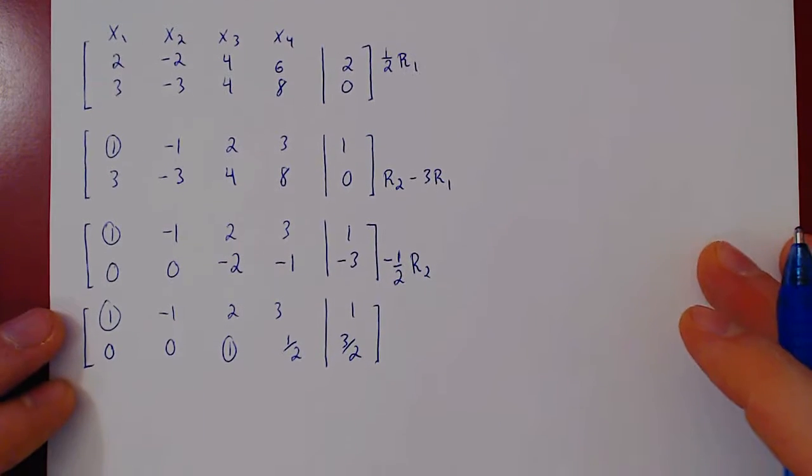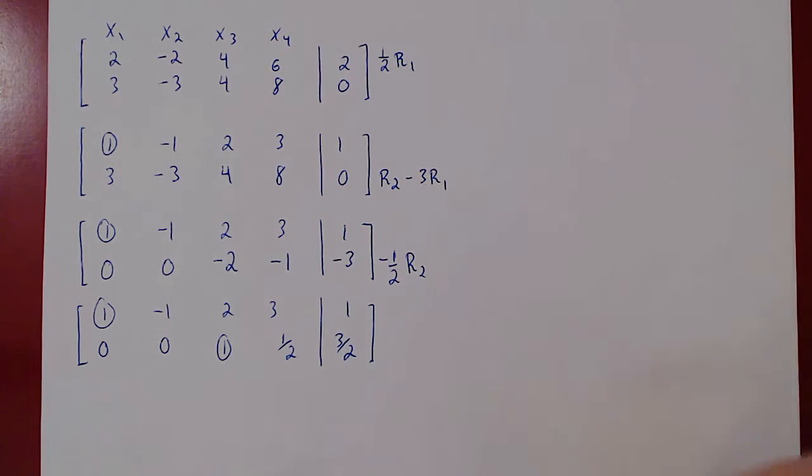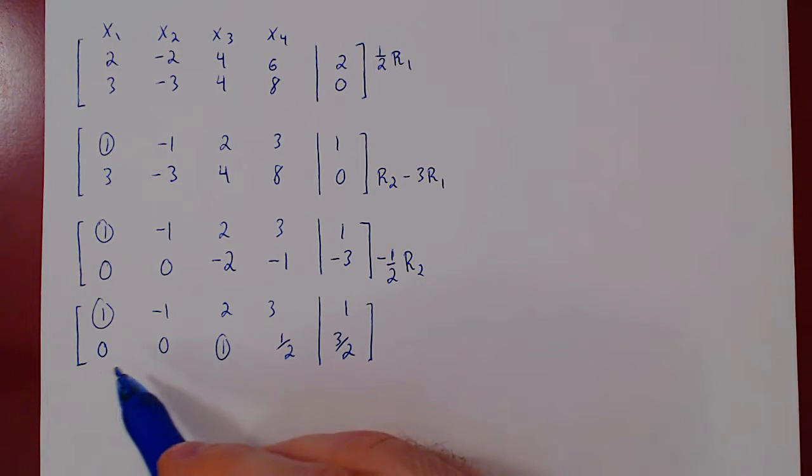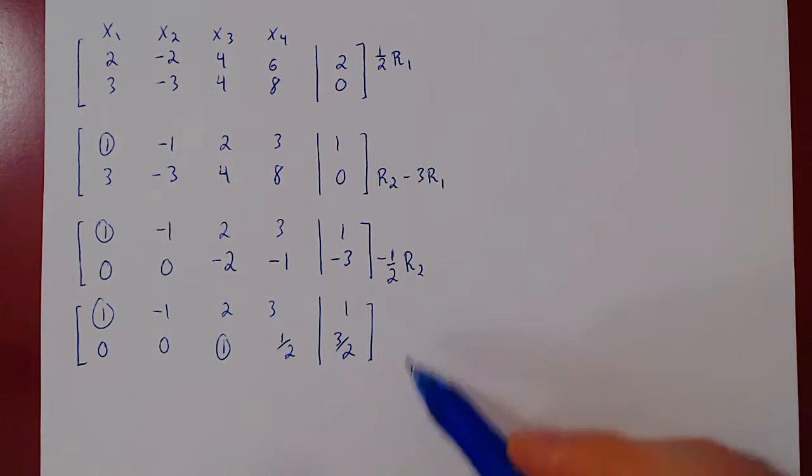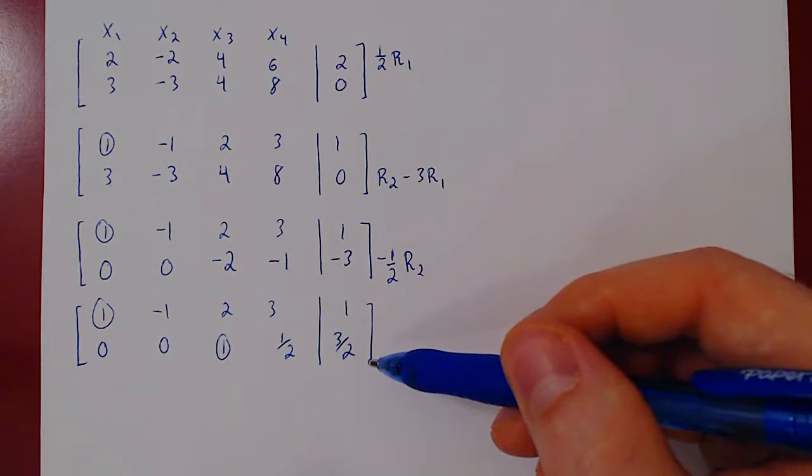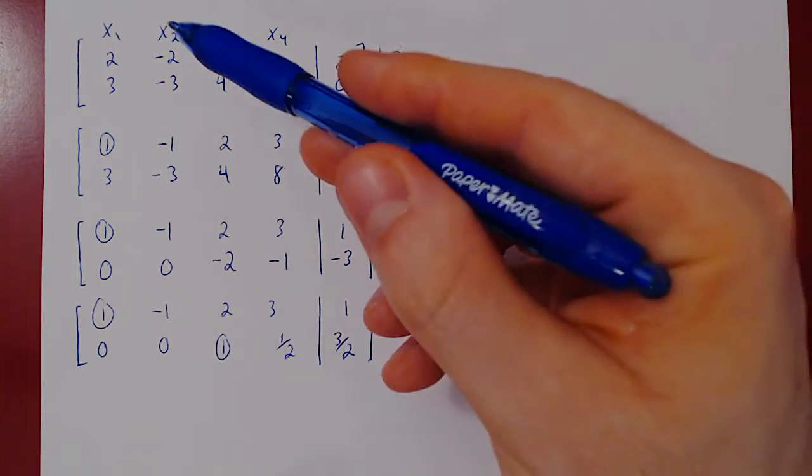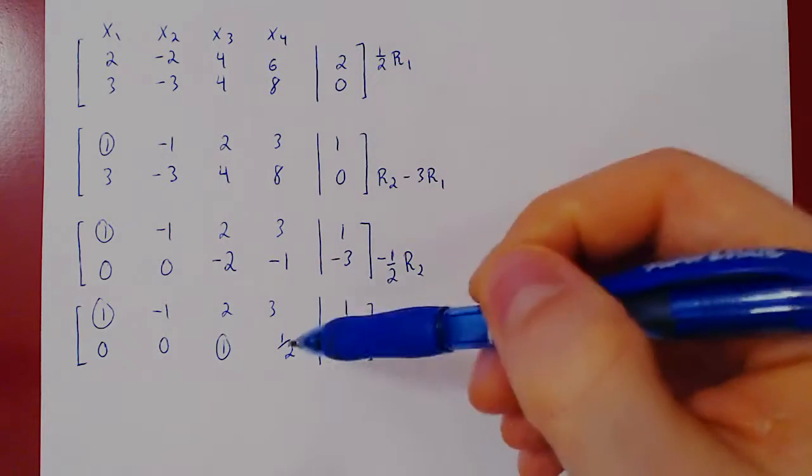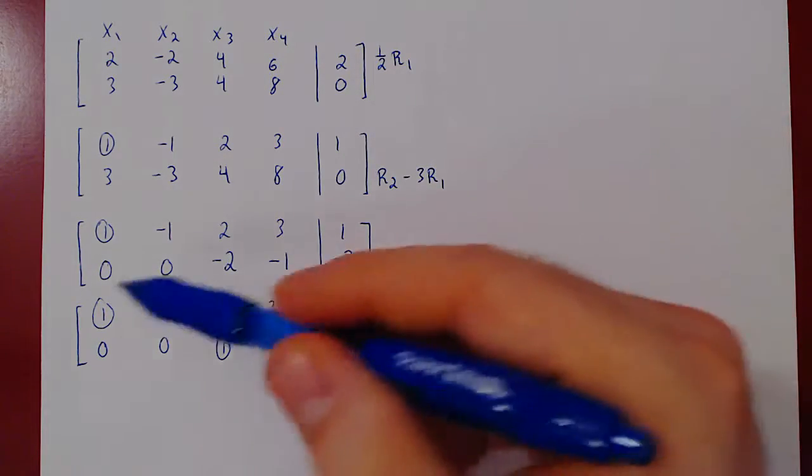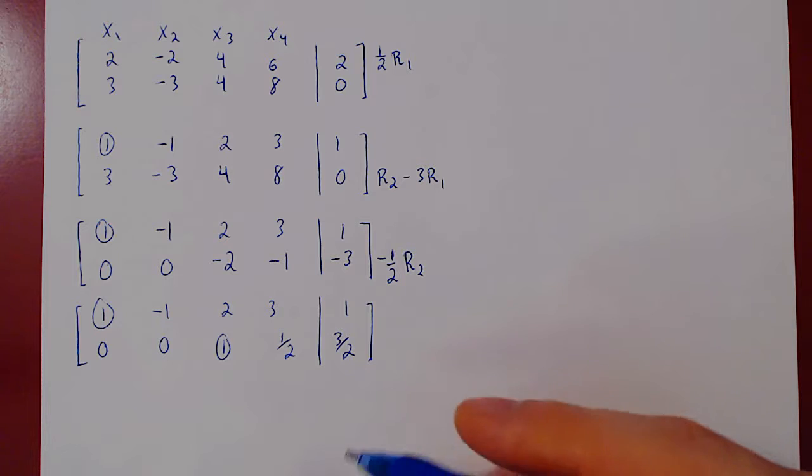And now we are done with Gaussian elimination. We have reached the final row of our augmented matrix. The matrix now is in row echelon form. But if you notice, two variables are actually free. x2 is free, x4 is free. Because we have three variables, we will now apply Gauss-Jordan elimination.